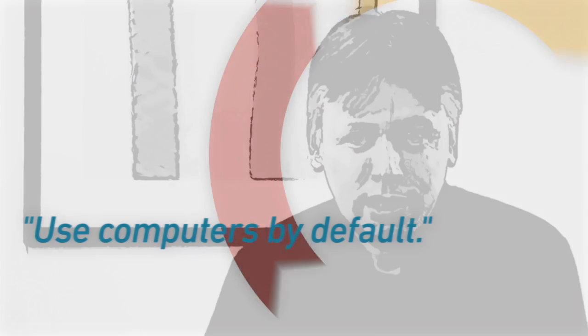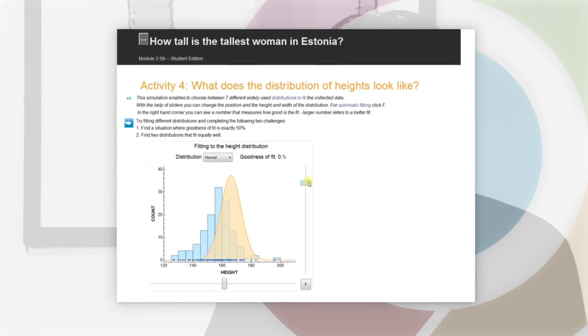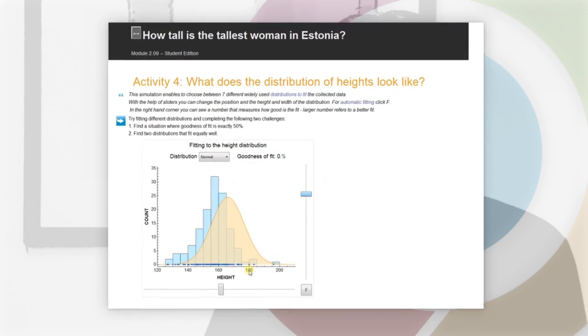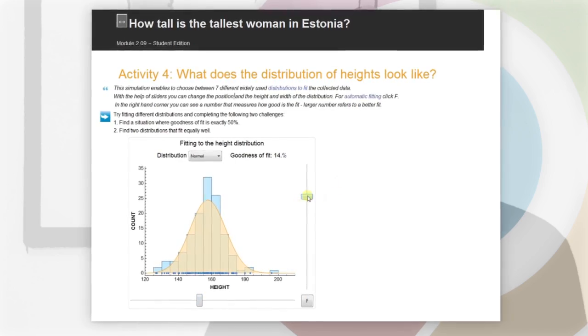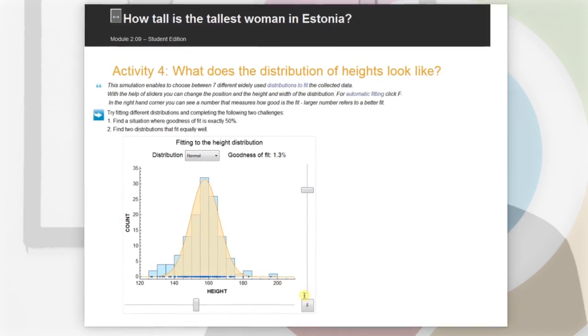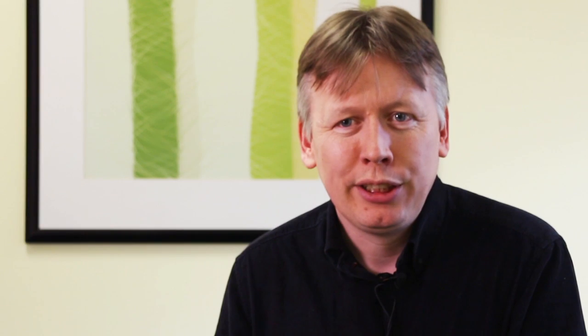Another key decision, following the real world, was to use computers by default. We use them for all computation, unless hand calculating is the most practical way, or the process of doing hand computation is conceptually empowering. One liberating consequence is that we can order the subject by conceptual difficulty instead of computational difficulty. Topics that are currently introduced very late because they're difficult to compute can be introduced much earlier because the concepts are actually quite straightforward.